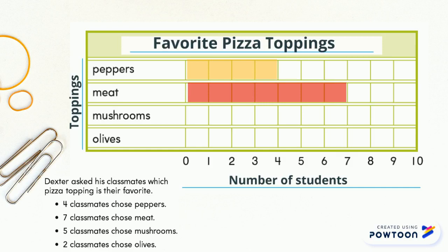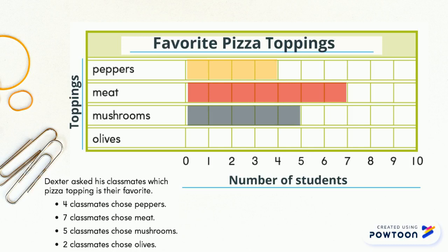The next one is mushrooms. Five classmates voted for mushrooms, so we will stop at the number five. And the last one, olives — two voted for it. We will color the bar graph until we reach the number two.